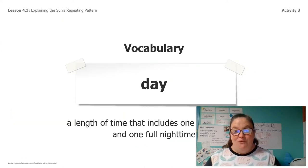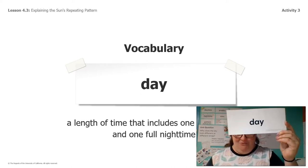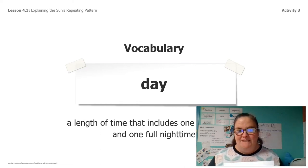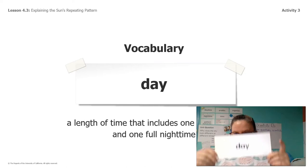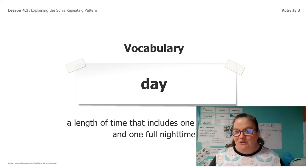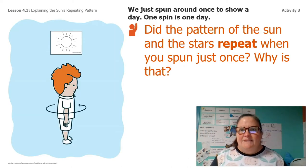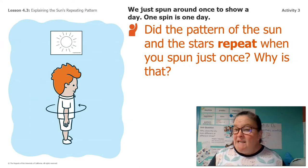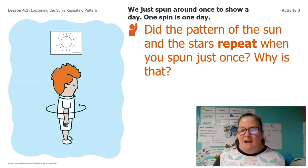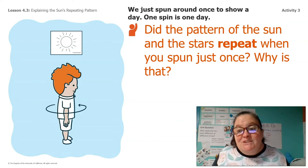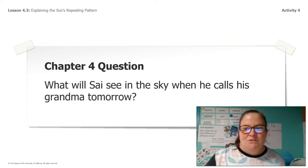So we just came up with our last vocabulary card: a day. A day is the length of time that includes one full daytime and one full nighttime. You get one day because the Earth spins around one time. Did the pattern of the sun and the stars repeat when you spun just once? No, it didn't — you only saw the stars once and you only saw the sun once. Because you only spun around once.